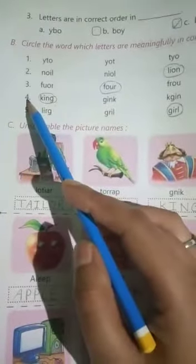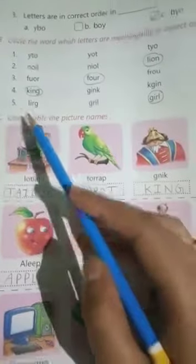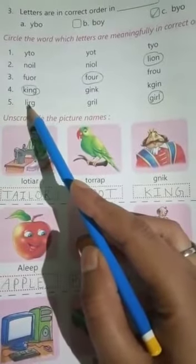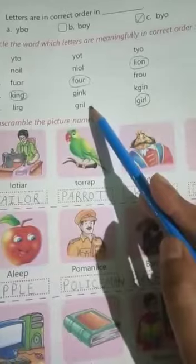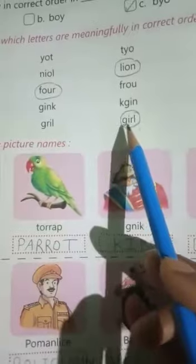Number five: L-I-R-G, G-R-I-L, G-I-R-L, G-L-I-R. Number five we will circle girl, G-I-R-L, girl.